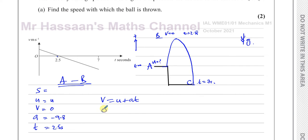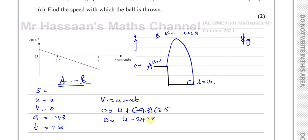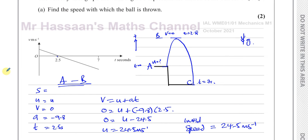This is enough to find U using the equation V equals U plus AT. We need to find U. We know V is 0, because at the top of the flight the velocity becomes 0 for an instant. A is negative 9.8 and time is 2.5 seconds. So: 0 equals U plus negative 9.8 times 2.5, which gives U minus 24.5 equals 0. Therefore U equals 24.5 meters per second — that's the initial speed with which it was thrown. That's the answer to Part A.